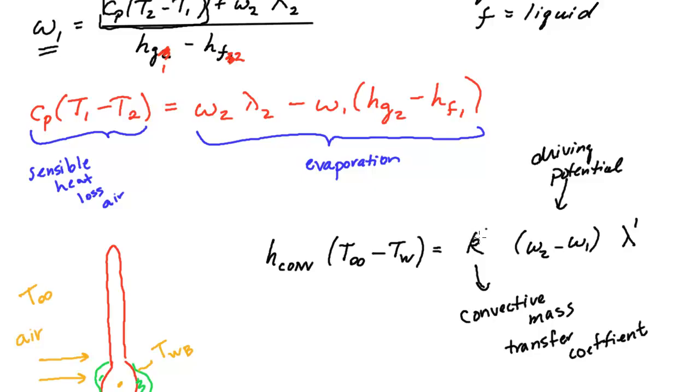So this is a coefficient that lets you know how fast you can evaporate, how fast can these water molecules diffuse in the convective sense.